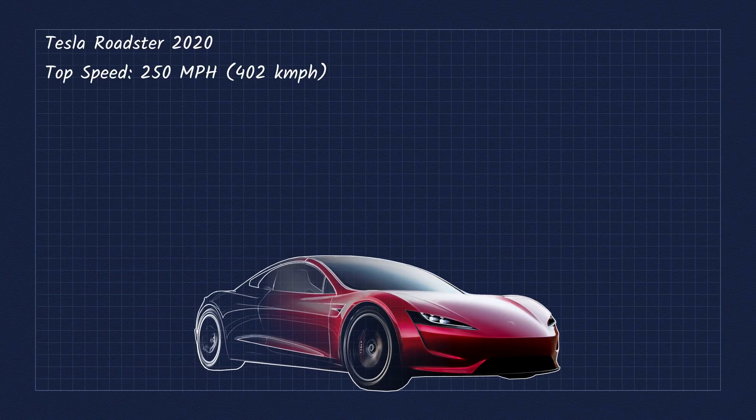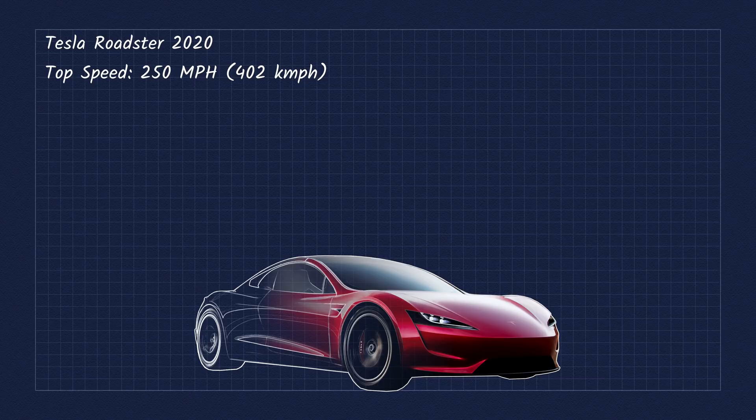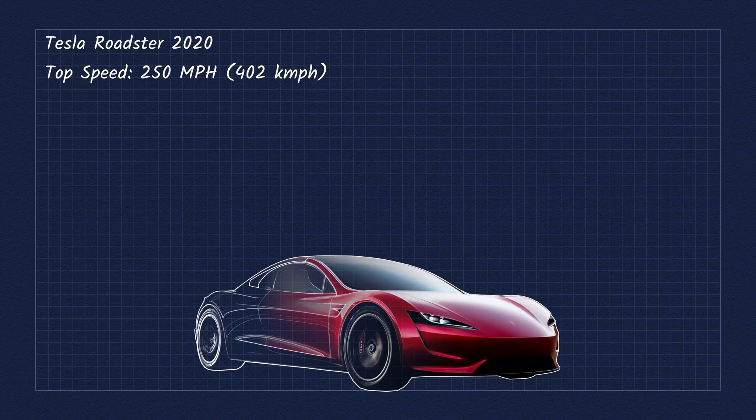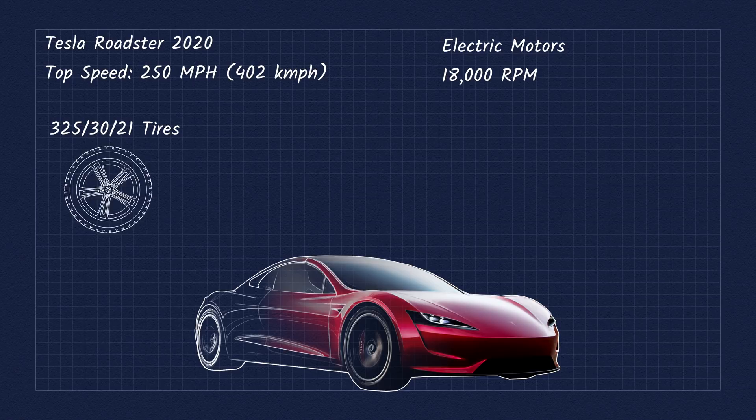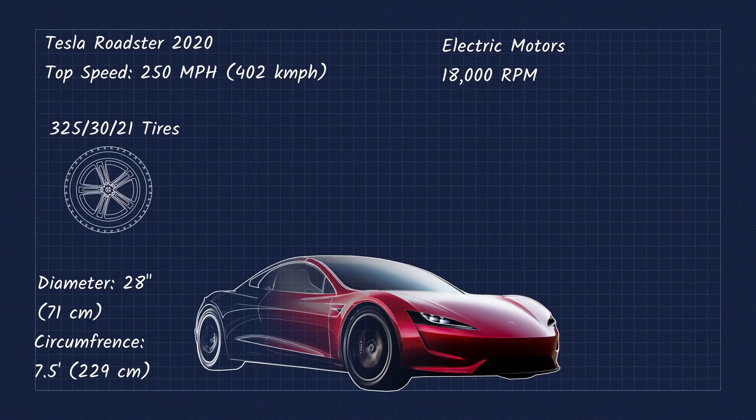To see how the 2020 Roadster can achieve its top-rated speed of 250 miles an hour, let's do some calculations. Let's assume that the Roadster motors have a max speed of 18,000 rpm. With 21-inch rims, 325, 30, 21 tires, the total wheel diameter is about 28 inches. Multiplying that by pi gives us a circumference of about 7.5 feet.